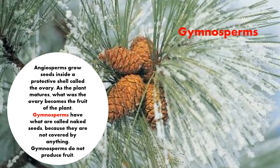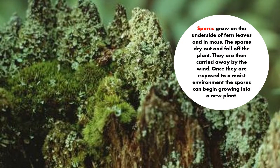Gymnosperm. Spores grow on the underside of frond leaves and in moss. The spores dry out and fall off the plant, and they are then carried away by the wind. Once they are exposed to a moist environment, the spores can begin growing into a new plant. These tiny microscopic spores fly around in the wind, and as soon as they land on something wet —